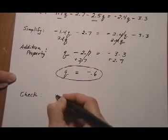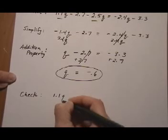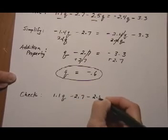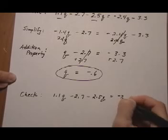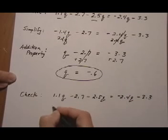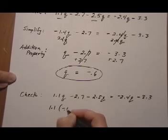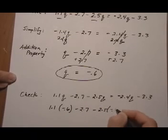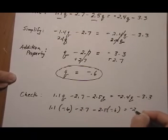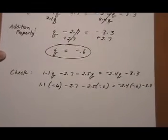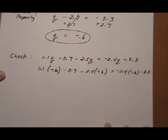Of 1.1Q minus 2.7 minus 2.5Q equals minus 2.4Q minus 3.3. So we're going to put that back in here: 1.1 times minus 0.6 minus 2.7 minus 2.5 times minus 0.6 equals minus 2.4 times minus 0.6 minus 3.3.